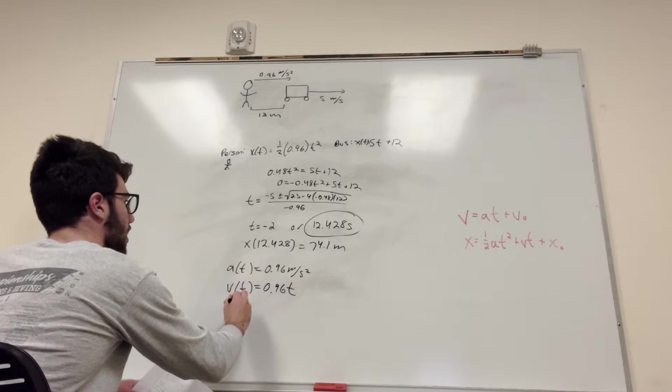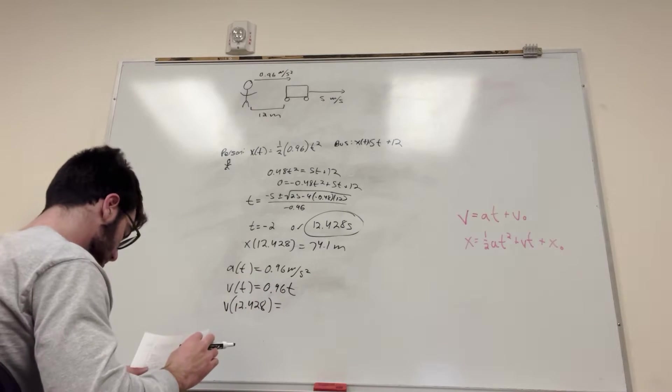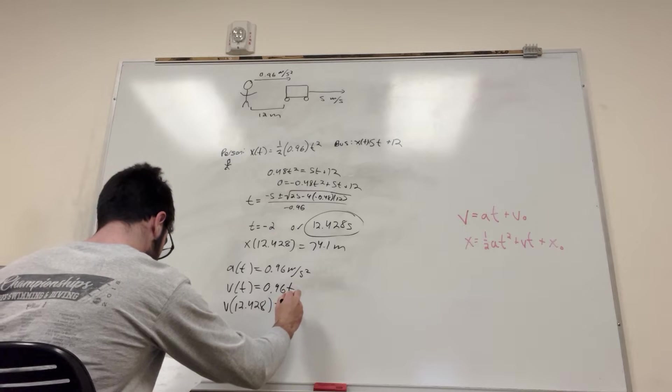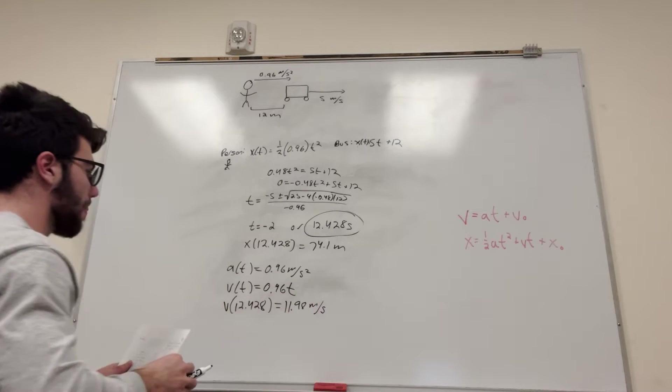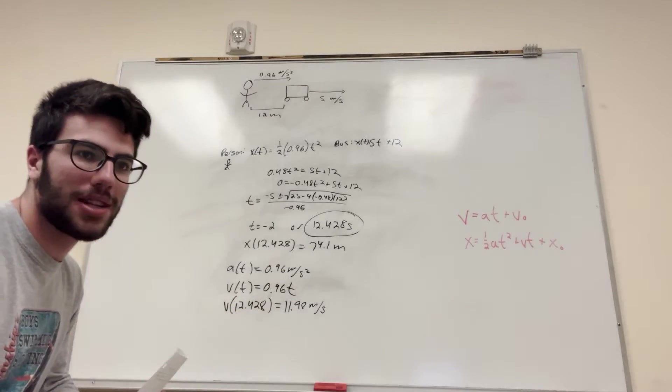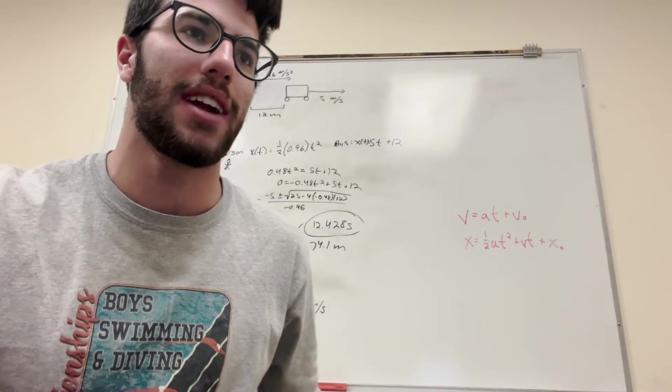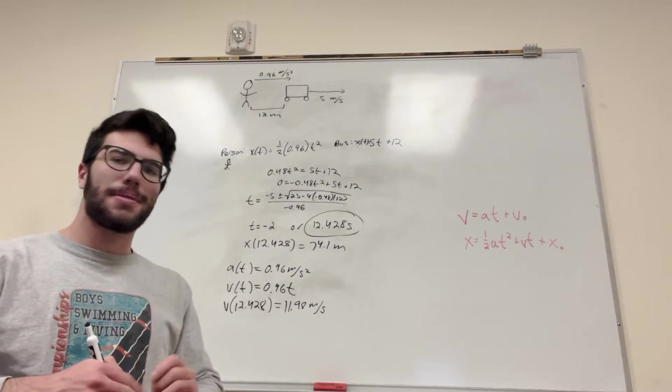Velocity at 12.428 equals 11.98 meters per second. That's how fast we're going when we run up to the bus. I think the final part asks is it possible to run that fast, like would an average college student be able to run that fast?